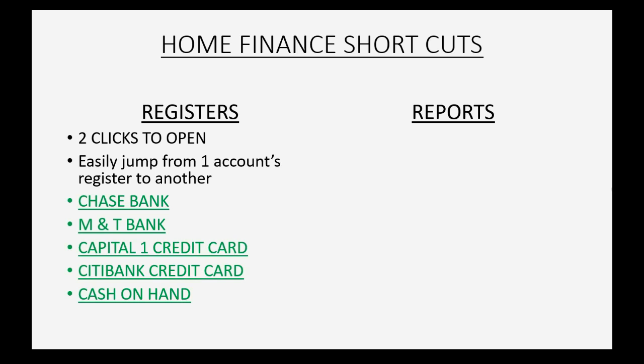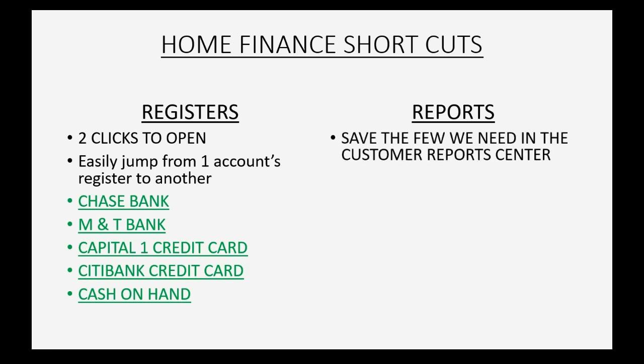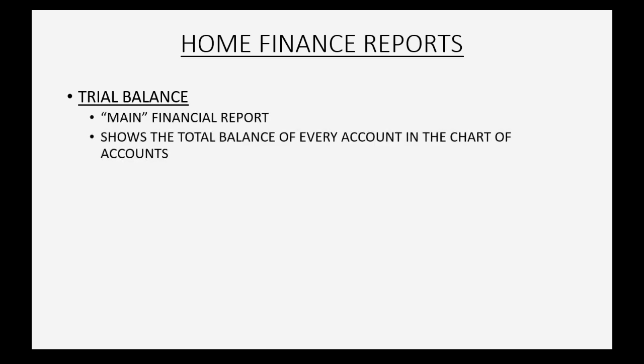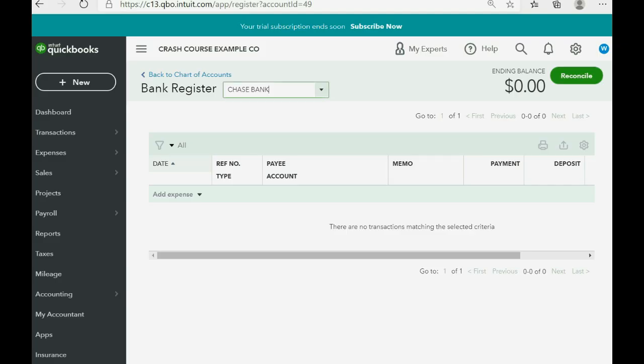We will experience recording transactions starting in the very next video. The reports we use in QuickBooks Online for home finance give us the ability to see the results of the transactions recorded into the register. We will save the ones we need in the custom reports center so we can see everything quickly. The main report we need is the trial balance — this is the main financial report, and it shows the total balance of every account in the chart of accounts.